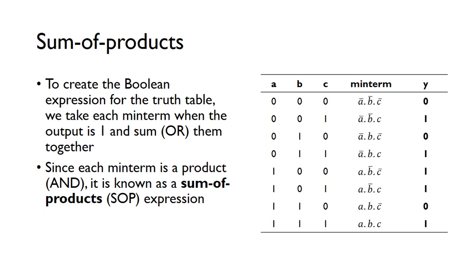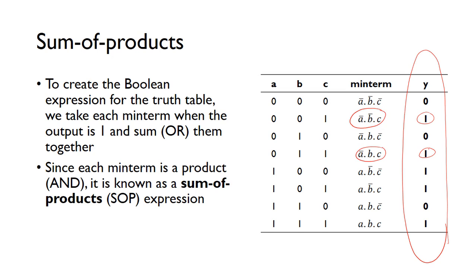From these min terms and the truth table, we can create what's called a sum of products expression. This is our output Y for the security system. We just look at the cases where we've got a one for the output and get the corresponding min term. Each one of them is a product with an AND — since these dots represent an AND function, that's a three-input AND. AND does Boolean multiplication, so that's a product. We feed all those together into an OR gate, and since OR does binary addition that's a sum — so here we've got a sum of products.